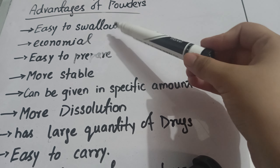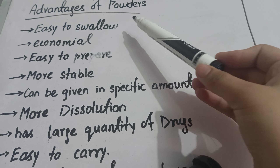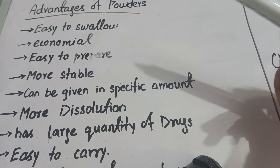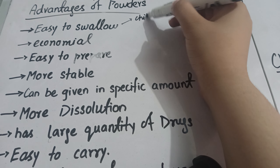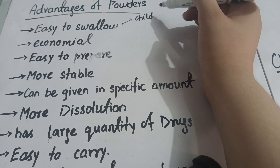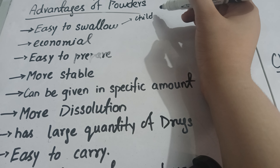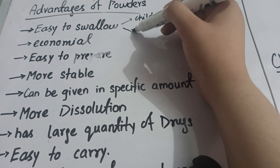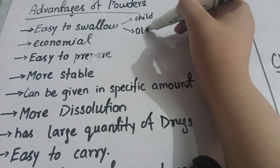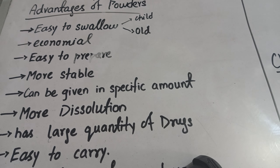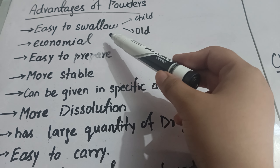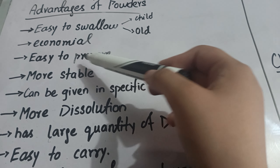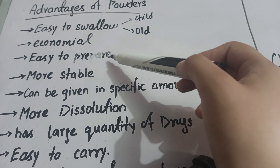Powders are easy to swallow for children — they can easily take powders rather than tablets or capsules. Old people also find them easy to swallow. The second advantage is that they are economical, very cheap in nature, and they can easily be prepared.